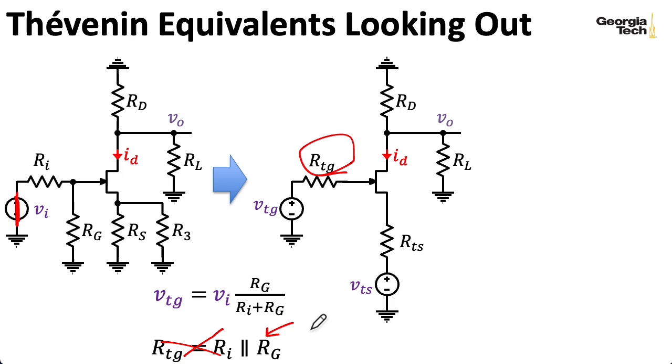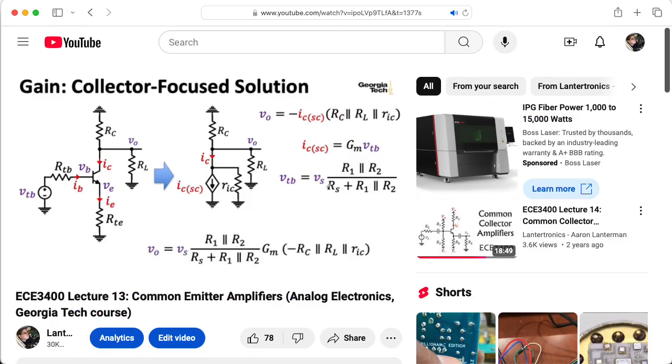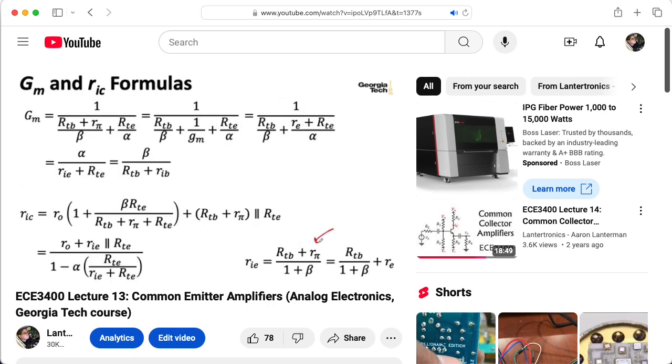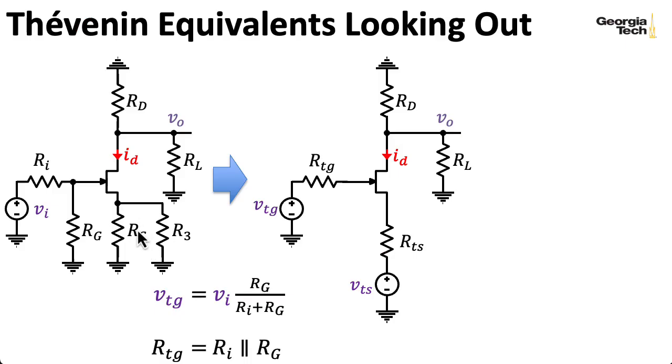This is in contrast to the analogous situation with the BJT and the common emitter amplifier, because there we need to worry about the base current. So there we worry about the resistance seen looking out of the base. The Thevenin equivalent voltage seen looking out of the source is just zero, and the Thevenin equivalent resistance seen looking out of the source is just RS in parallel with R3. There's other schemes you could use down here, and it's easy enough to replace this RTS with the appropriate calculations for other schemes.